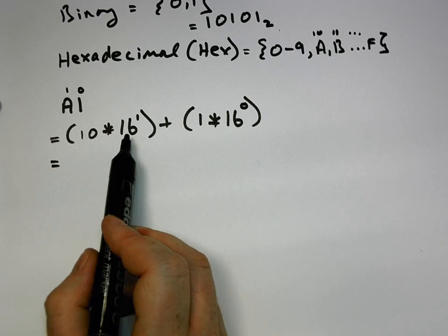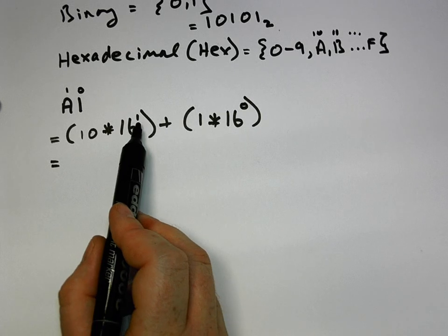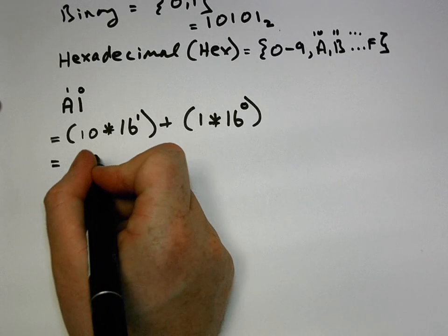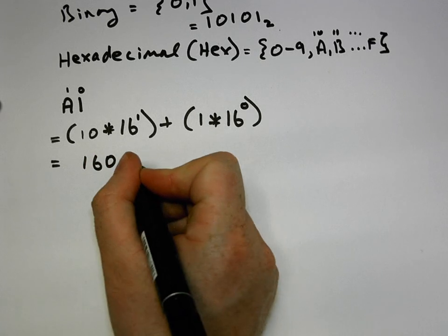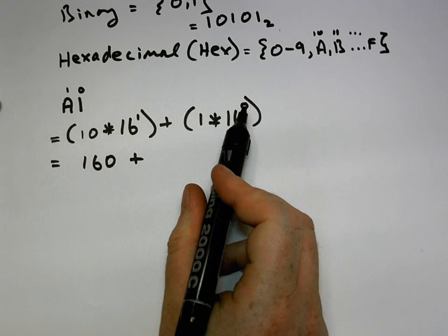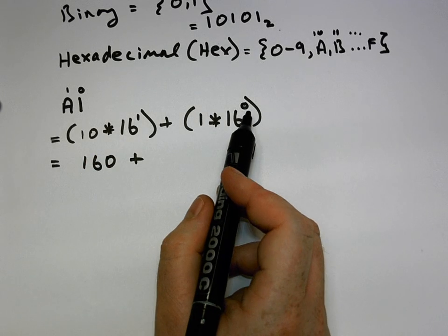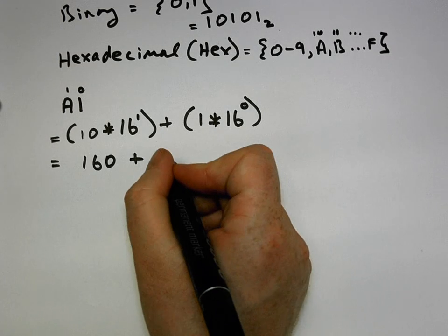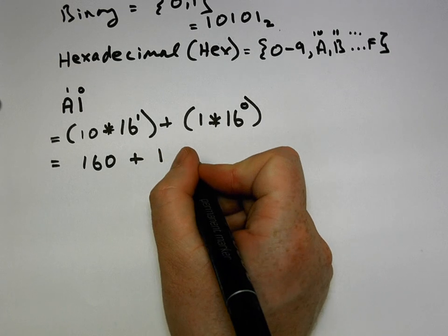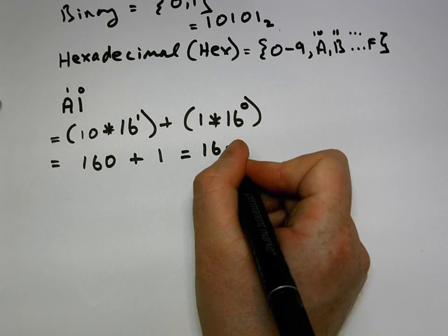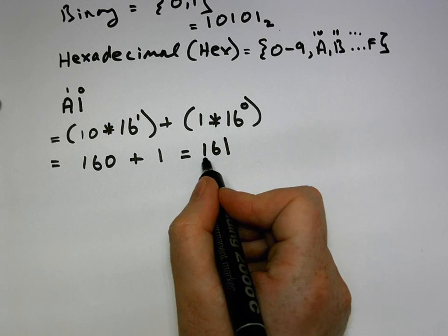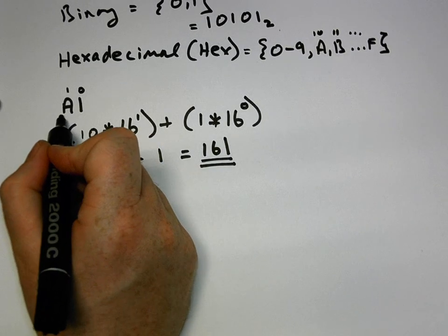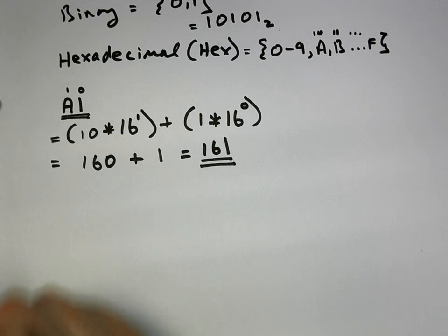So if we work this out, sixteen to the power of one is sixteen, multiplied by ten gives us one hundred and sixty. Plus sixteen to the power of zero — anything raised to the power of zero gives us one. One multiplied by one gives us one. So we get one hundred and sixty-one. So one hundred and sixty-one in decimal is equal to A1 in hexadecimal.